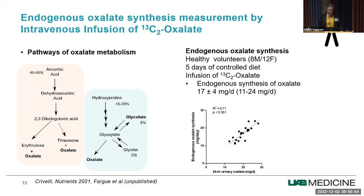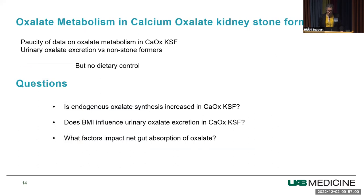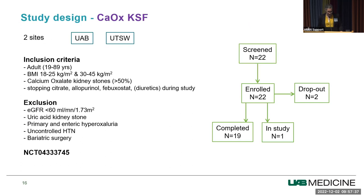For stone formers, less is known — urine oxalate is known to be higher, but many studies were done without dietary control. Outstanding questions include: Is endogenous synthesis increased in stone formers? Does BMI influence urine oxalate excretion? What factors impact gut absorption of oxalate? Our study addressing the top two questions recruited adult subjects with calcium oxalate kidney stones of low, normal, and obese BMI at two sites — UAB and UT Southwestern. We excluded known causes of hyperoxaluria. 22 people were screened, 19 completed. A comparable healthy volunteer study was done at UAB recruiting adults with BMI between 18 and 45, with 20 completing.